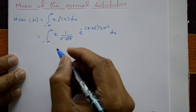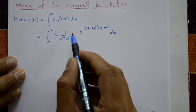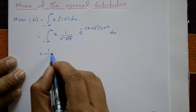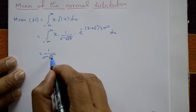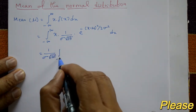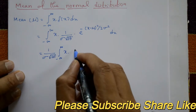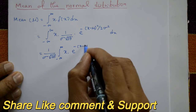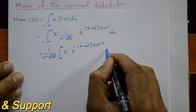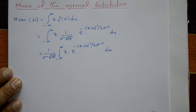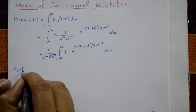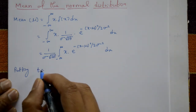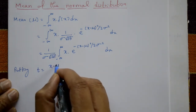Now take the constant with respect to x outside. So we have 1 over sigma times square root of 2 pi, times the integration from minus infinity to plus infinity of x times e raised to minus (x minus mu) whole square divided by 2 sigma square, dx.